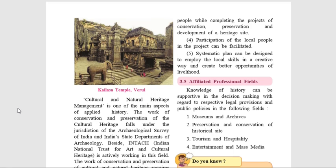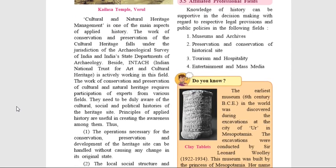Let us see the affiliated professional fields. There are various professional fields affiliated to applied history. They are: museums and archives. The archives preserve and store historical documents or records of places, institutions, people, official records, old films, etc. Second, preservation and conservation of historical sites. Third, tourism and hospitality. And the fourth one, entertainment and mass media.